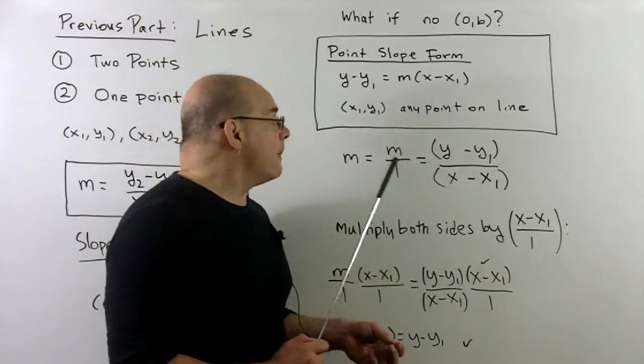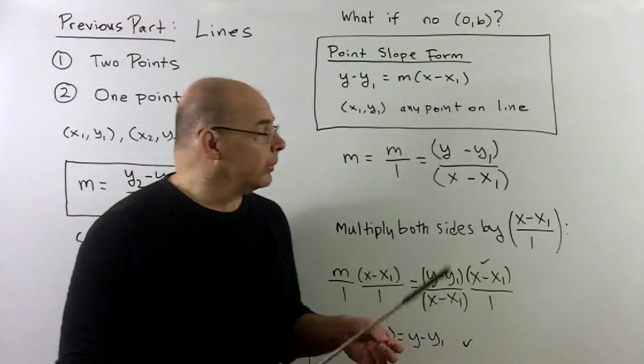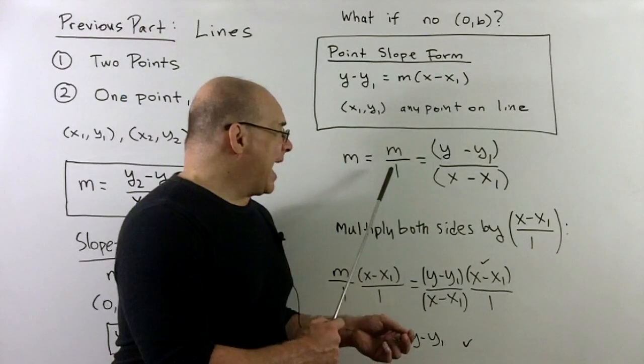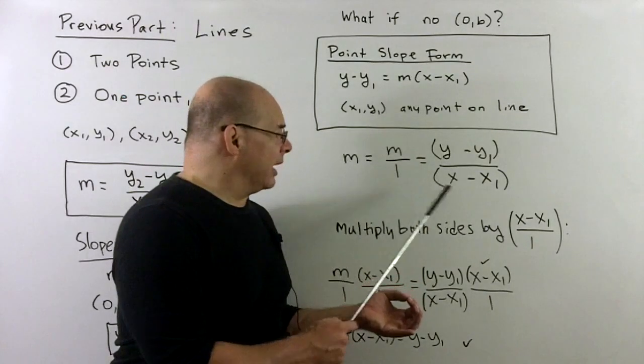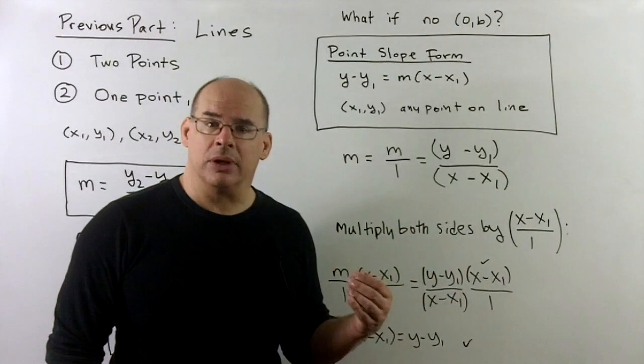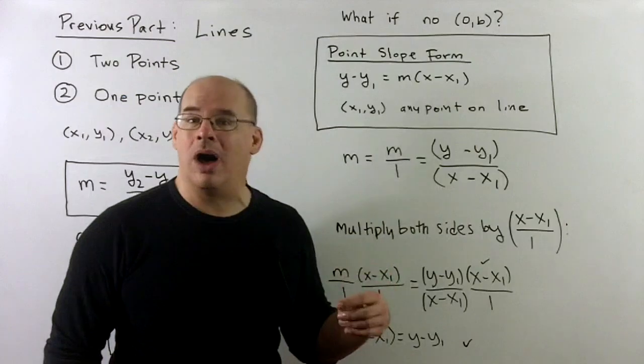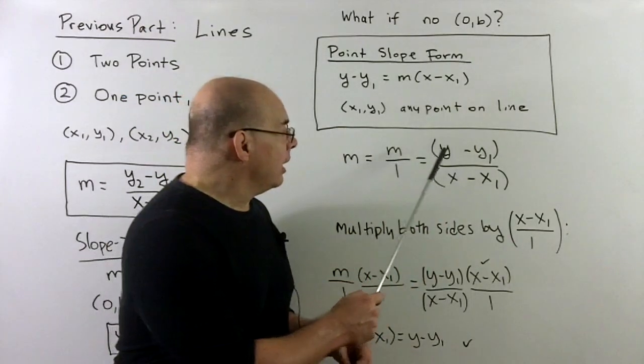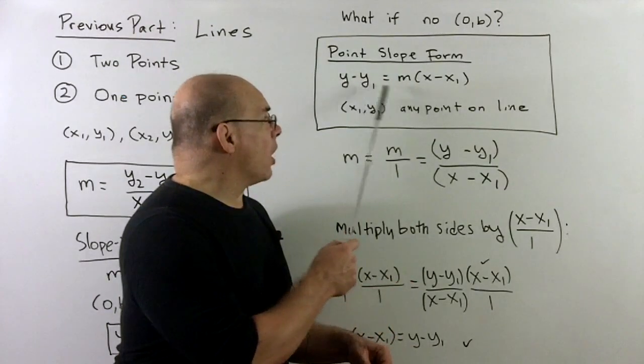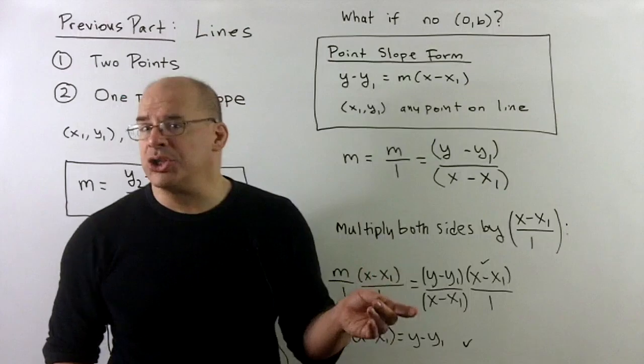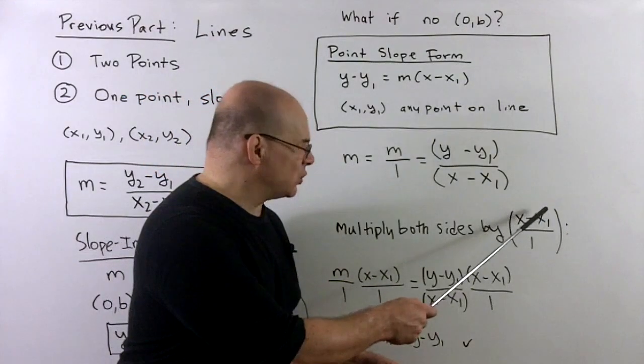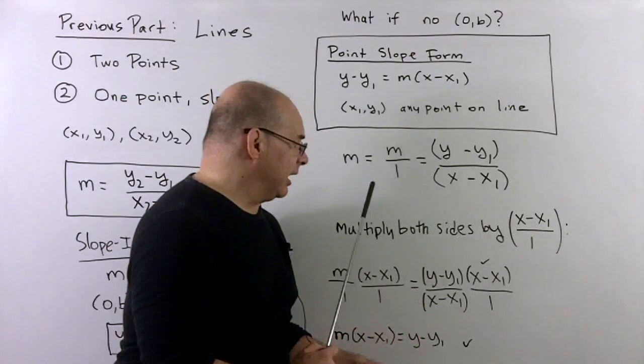Where does this come from? Well, we just take our definition of slope, and I'm going to erase the 2s on y₂ and x₂. And then also, to make this a little bit easier to work with the fractions, I'm going to take m and put it over 1, because if I take any number over 1, that's the same as the number. Now, when I have this, we can either cross-multiply to get directly to our equation, or just for some practice with fractions, I'm going to multiply both sides by x minus x₁ over 1 to clear out the denominators.